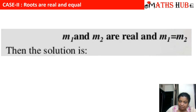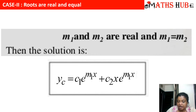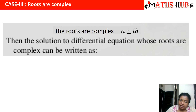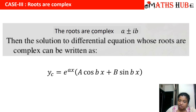The third case is when the roots are complex. Complex roots always exist in conjugate pairs: α ± iβ. In that case the complementary solution is: y_c = e^(αx)[c₁cos(βx) + c₂sin(βx)]. So comparing the root a ± ib, a gives the exponent and b gives the argument of the trigonometric functions.